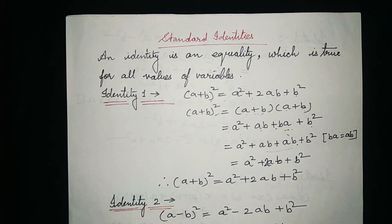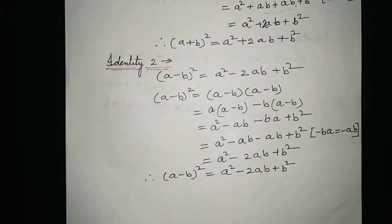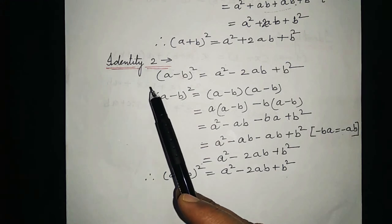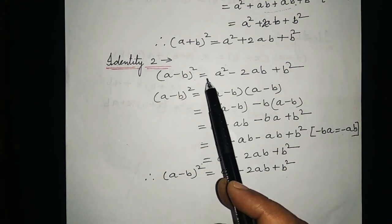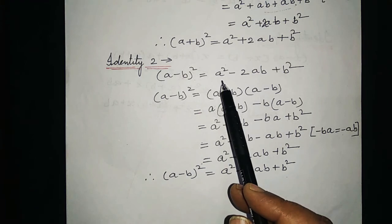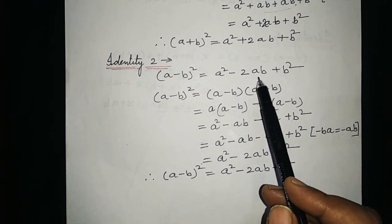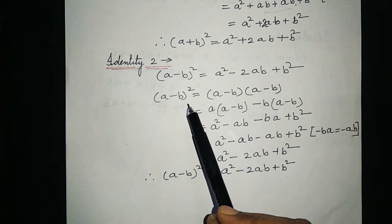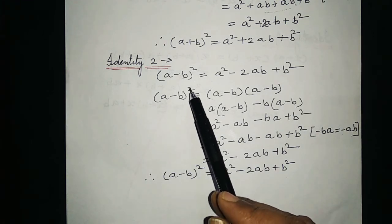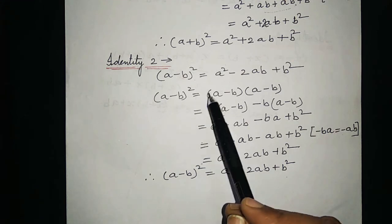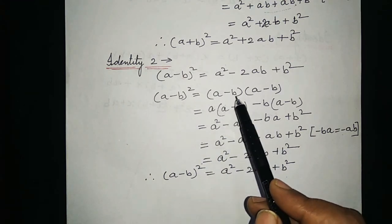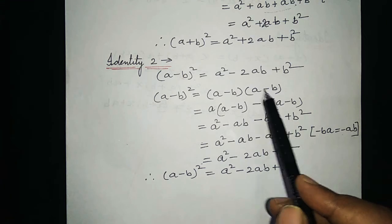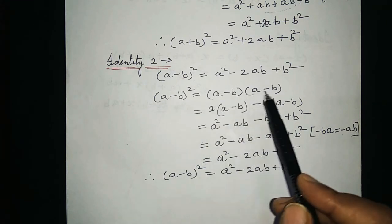Now see the proof for identity 2. Identity 2 is: a minus b whole square is equal to a squared minus 2ab plus b squared. We write a minus b whole square as a minus b into a minus b — that is, a minus b written two times.